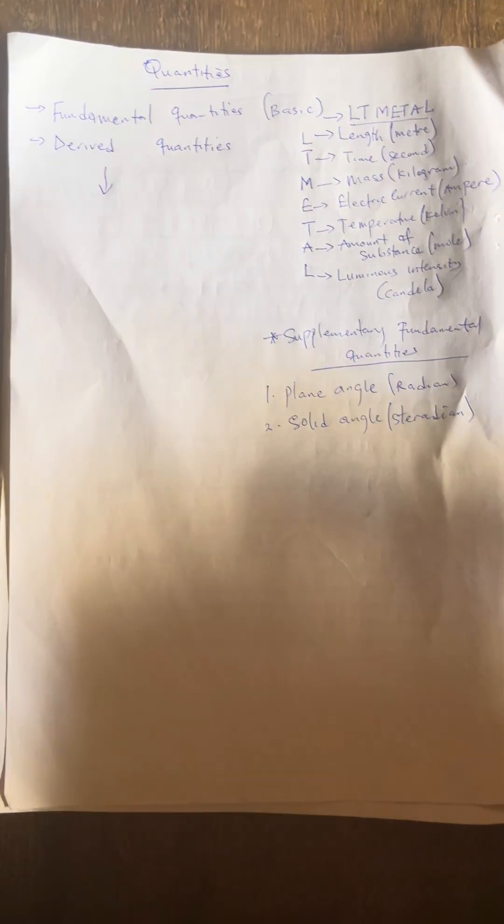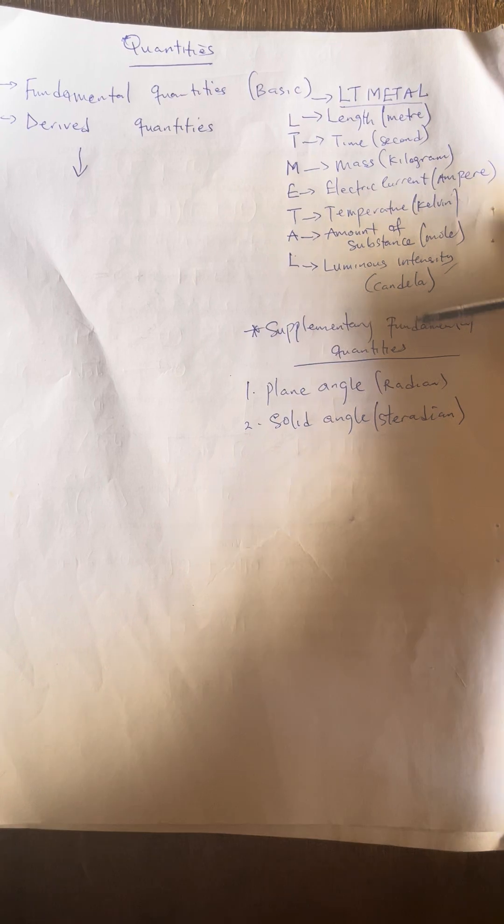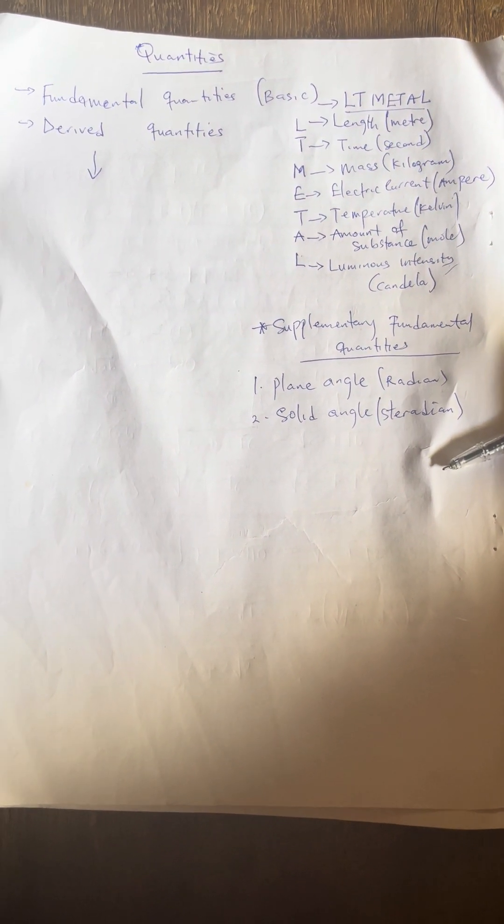Now, what are examples of derived quantities? Derived quantities are quantities that are derived from two or more fundamental quantities. Just note that any quantity that is different from all these fundamental quantities is known as a derived quantity.